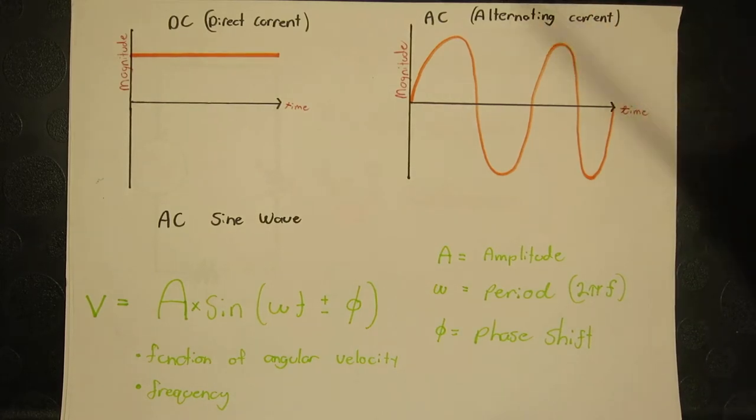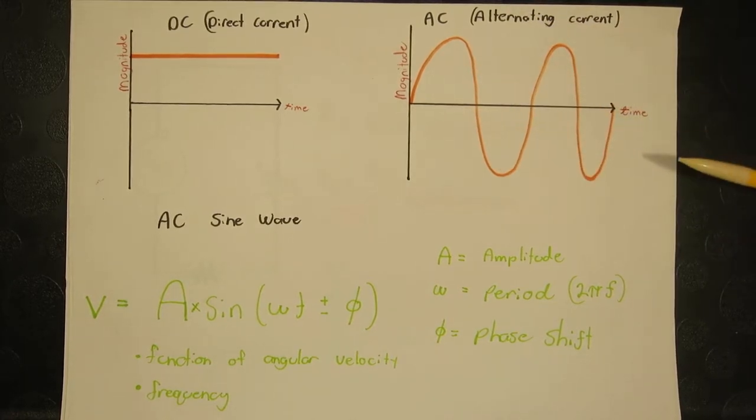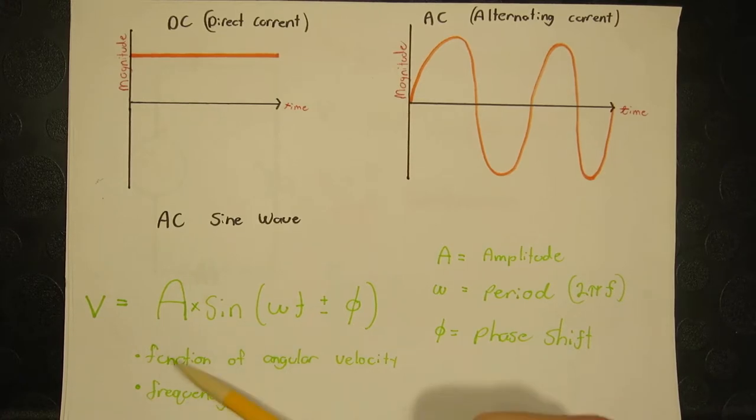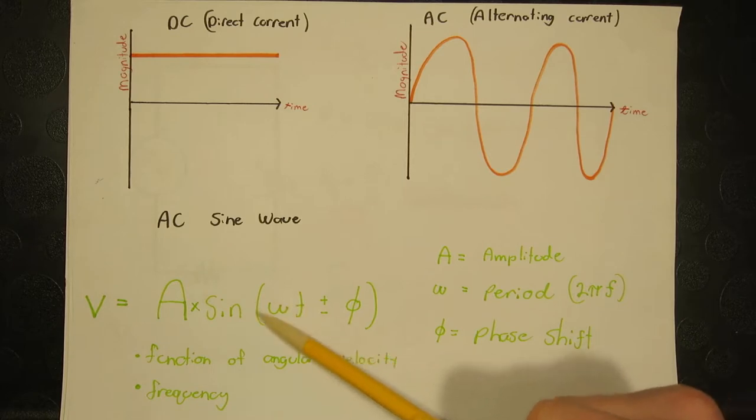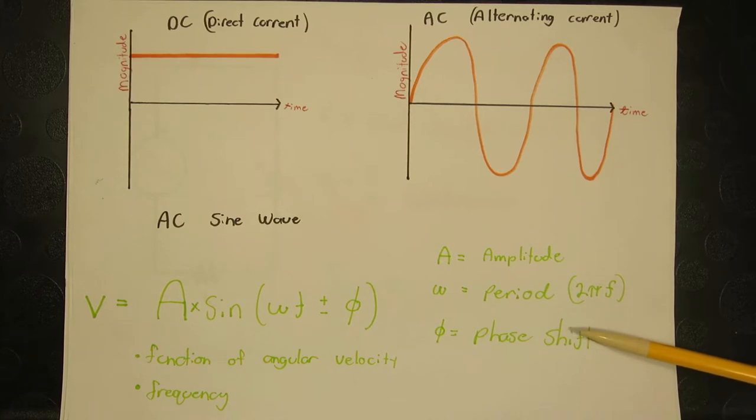Now, AC circuits are not as simple as DC circuits due to this fluctuating sinusoidal waveform of the voltage and current. As shown here down at the bottom, the voltage is represented by an amplitude A, omega which is 2πf, and phi, which is the phase shift of the sine wave.